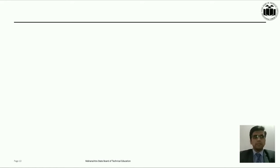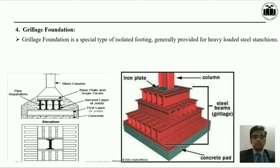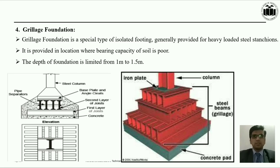The fourth type of shallow foundation is grillage foundation. The grillage foundation is a special type of isolated footing generally provided for heavy loaded steel sections, i.e. steel columns. It is provided in locations where the bearing capacity of soil is poor. Such kind of grillage foundation is provided at a depth limited up to 1.5 meters.